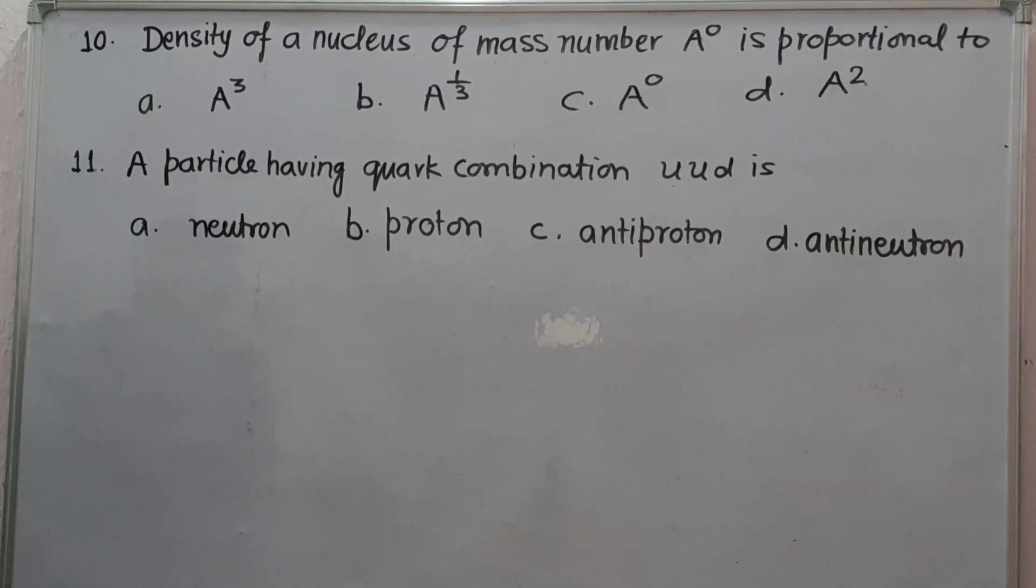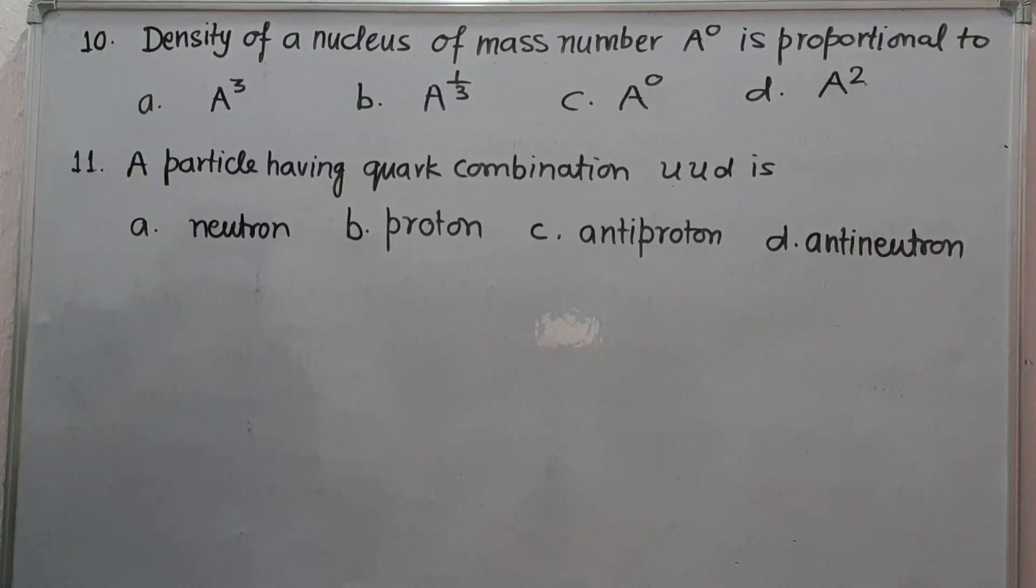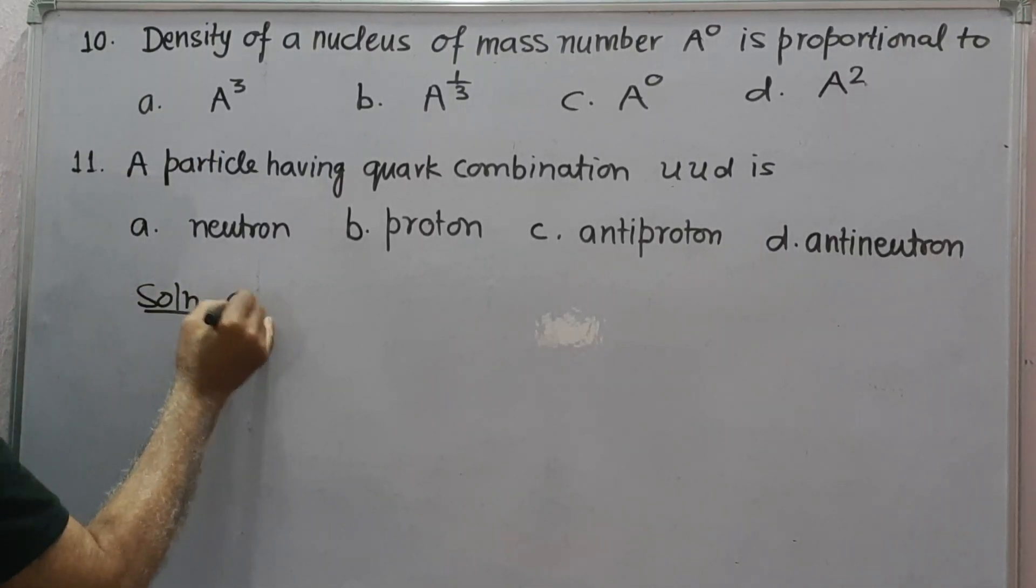Next question number 10: density of nucleus of mass number A is proportional to - these are the options. Now, solution to question 10.